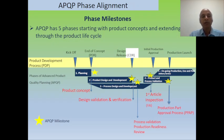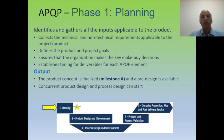After successful completion of each phase, there are several milestones to be achieved. In Phase one — Planning — we gather and identify various inputs applicable to the product, like technical data and non-technical requirements. We define the product and project goals, ensure the organization makes key decisions that will influence the market, and establish timing for deliverables of each APQP element. During this phase, we decide the timing plan for different phases.